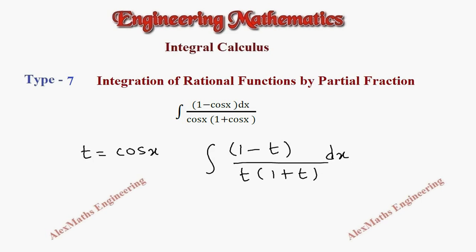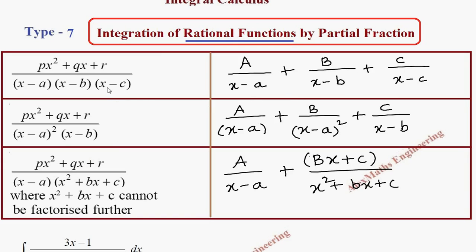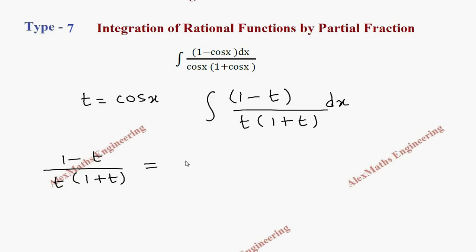Let's take the expression alone, which is 1 minus t by t into 1 plus t. We notice the degree of numerator is 1, degree of denominator is 2, so it is a rational expression and the denominator has two different factors: one is t, the other is 1 plus t. As we already discussed about the partial fraction rule, when denominators are different we apply the first rule, which is A by first factor plus B by second factor.